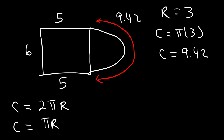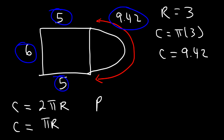So now to find the perimeter, we just have to add up the four values. 5 plus 5 is 10, plus 6, that's 16. And 16 plus 9.42 gives us a perimeter of 25.42 units.